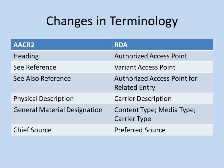Another change you'll notice with RDA is some changes in terminology. With AACR2 we talked about headings; with RDA we're talking about access points. When you're talking about an authority record, the heading — the term you're actually going to use — is now called an authorized access point. See references are variant access points. See-also references are authorized access points for related entries. Physical description is called carrier description now. And an important distinction: the General Material Designation is gone. The GMD — the thing that appears in brackets after the title to tell you what kind of resource you're looking at — has been replaced by three elements called content type, media type, and carrier type.